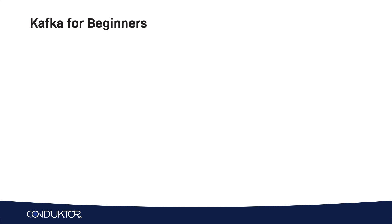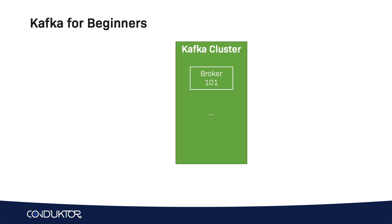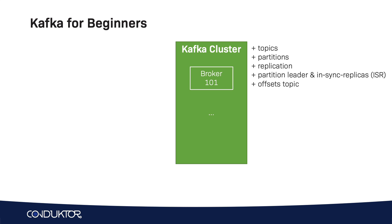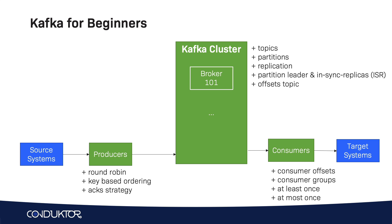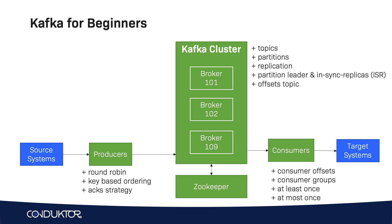So to take a summary, we'll learn about a Kafka cluster. We'll start with one broker and we'll learn about topics, partitions, replication factor, partition leader, and in-sync replicas, and the offsets topic. We'll learn about producers such as key-based ordering and acknowledgment strategy. We'll learn about consumers such as consumer offsets, consumer groups, and consumption strategies. We will learn about multi-broker Kafka clusters, adding brokers 102 all the way to broker 109 — but we'll have three brokers in this course.